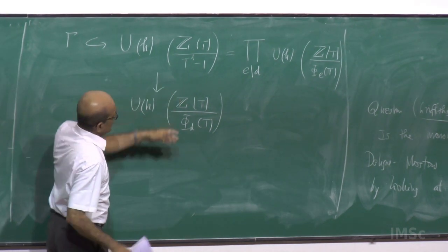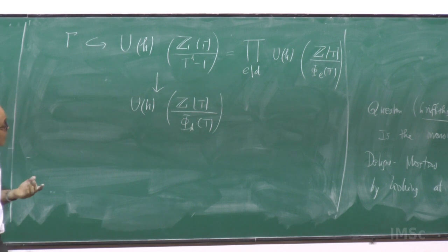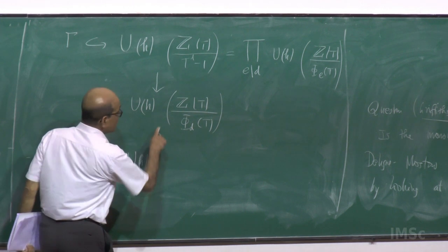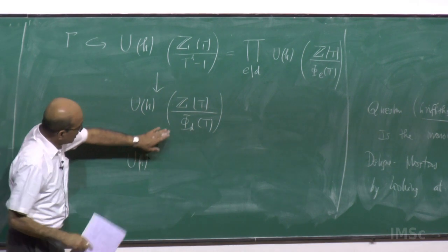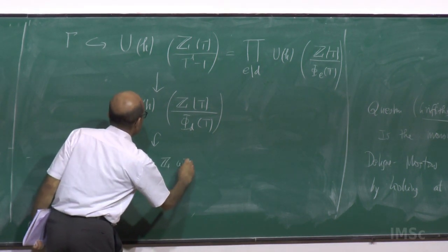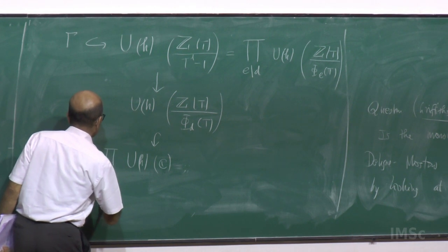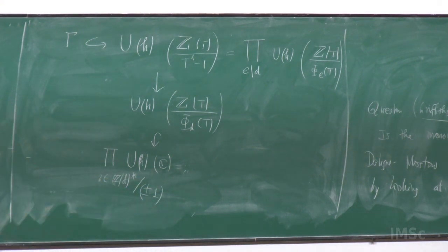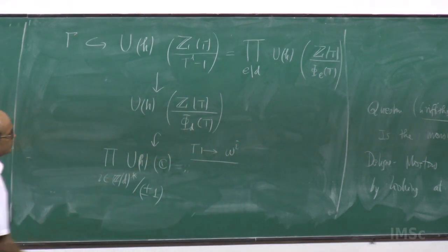Now, this is really the ring of integers in a d-th cyclotomic extension. Z[t]/Φ_d(t) is the ring of integers in the d-th cyclotomic extension. So this has many embeddings — one for each root of Φ_d(t). But I take only half of this because I am in the unitary group; the bar is determined by this. So I take only half of this: Z[omega], only those which are co-prime but ignore the ones related to complex conjugation.